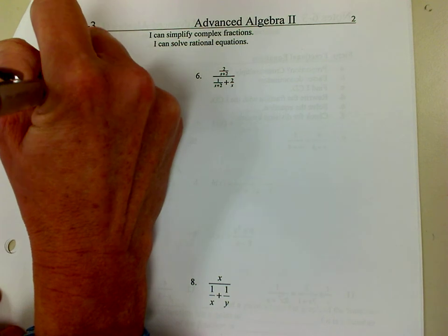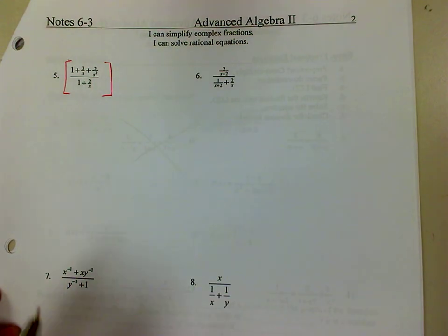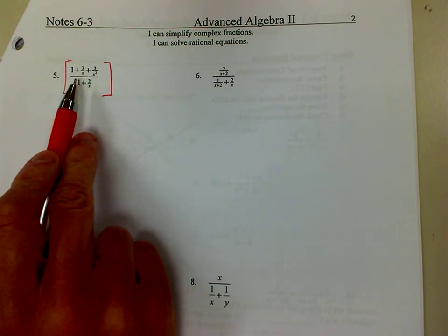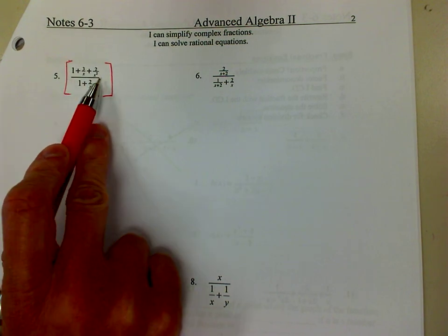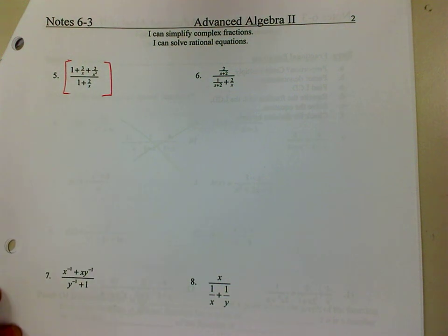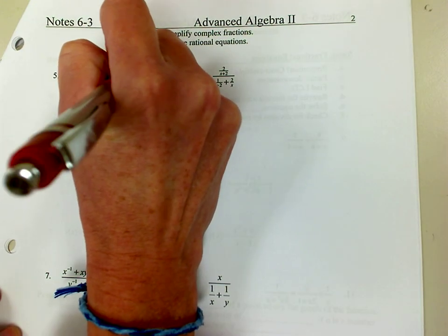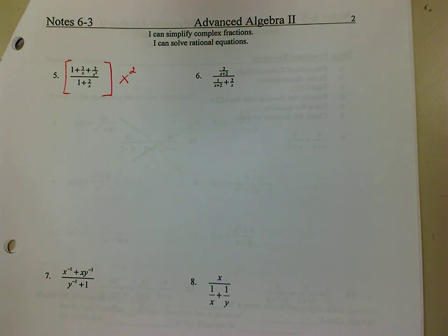So you're going to find the common denominator for both the top and the bottom of this fraction. I have an x, an x squared, and an x. So my common denominator would then be x squared. You're going to multiply each of these terms by x squared.